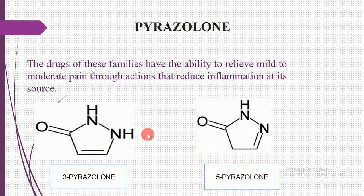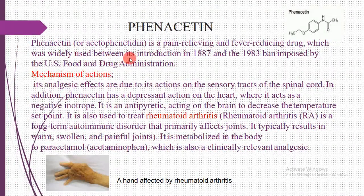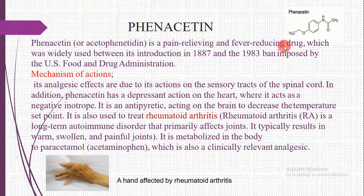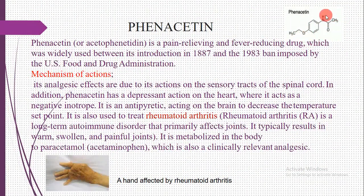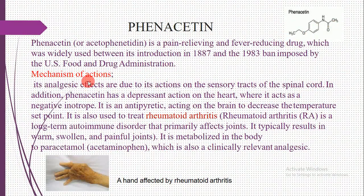The third group is phenacetins, also called acetophenitidines. Phenacetin is a pain-relieving and fever-reducing drug that was widely used between its introduction in 1887 and its ban by the U.S. Food and Drug Administration in 1983. Here is the structure of phenacetin — look at the structure-activity relationships and the number of atoms present, along with its chemical formula.